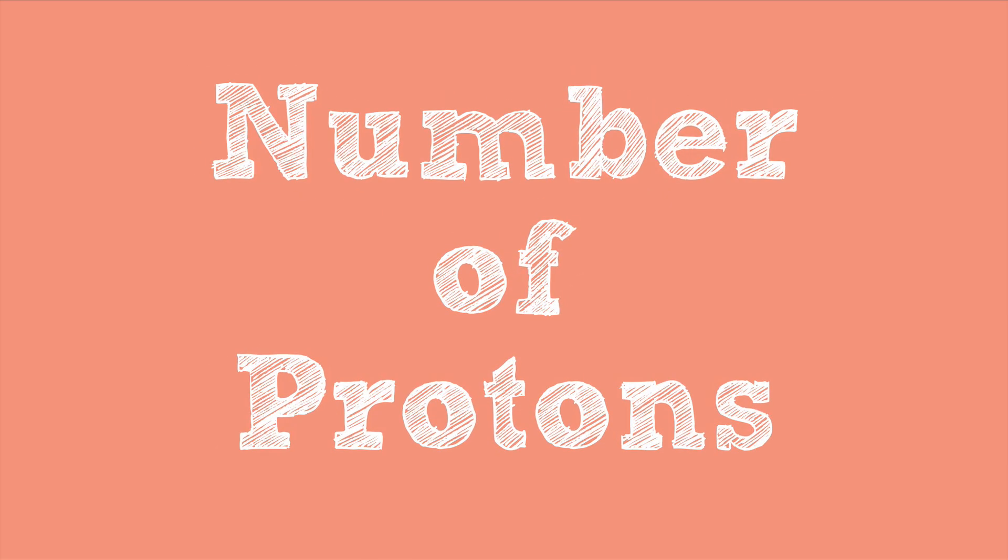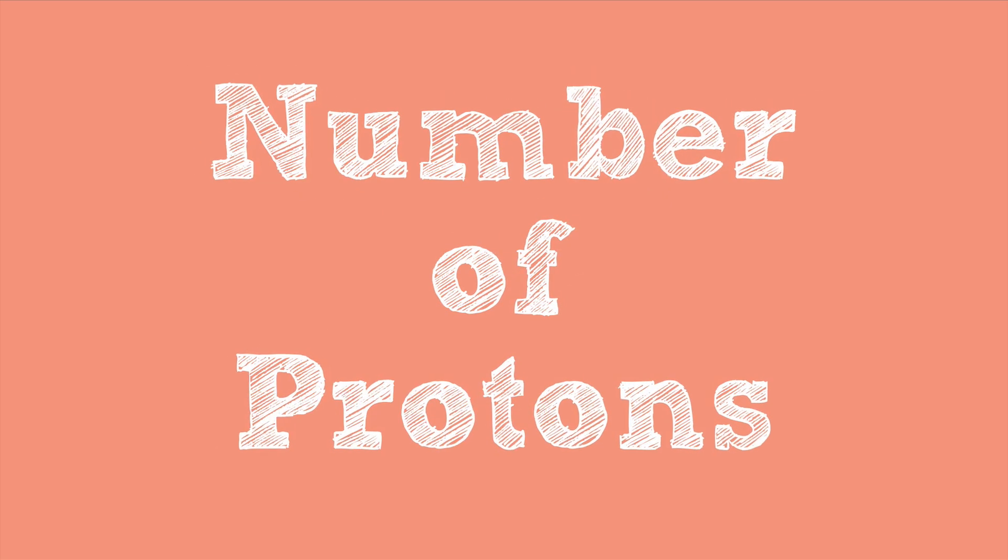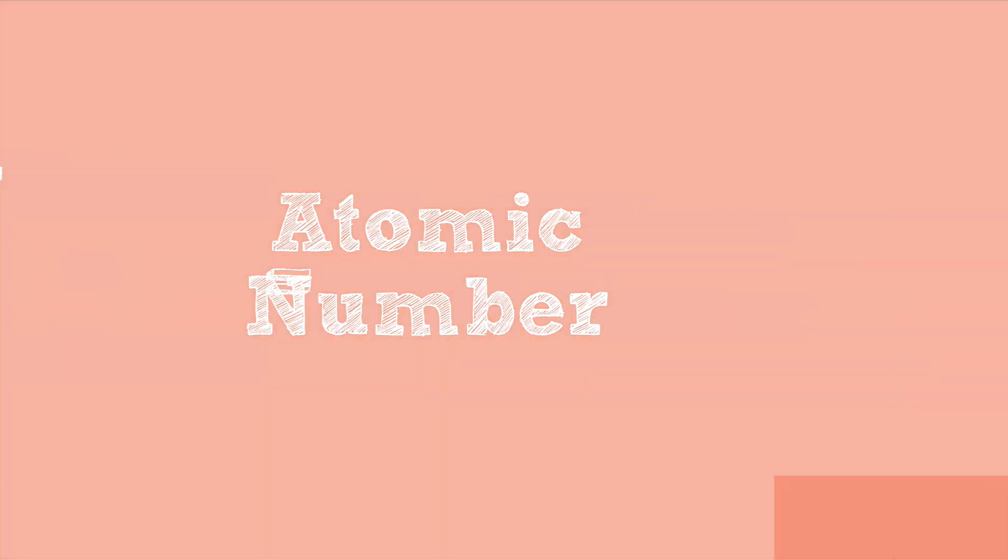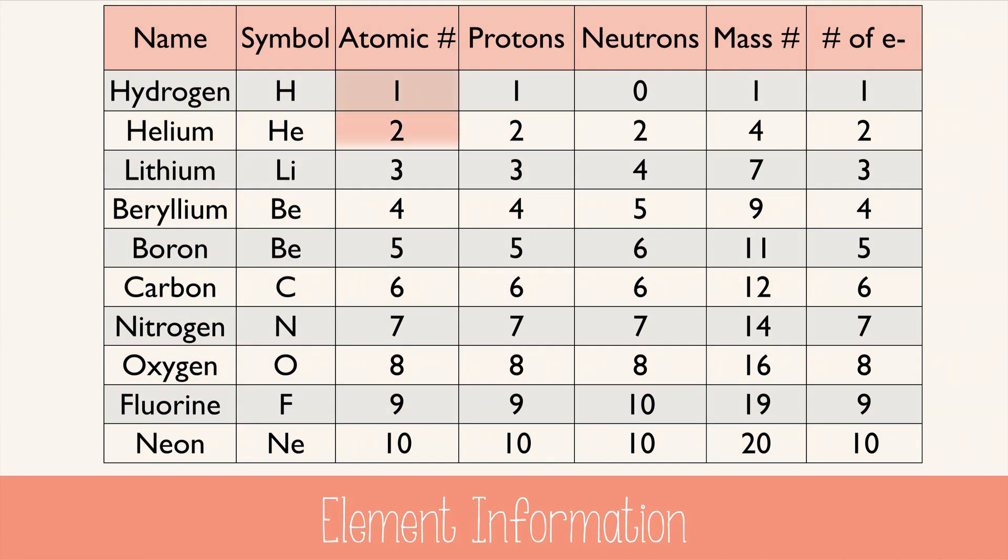The only thing that makes one element different from another element is the number of protons in the nucleus. In chemistry, the number of protons is called the atomic number. Looking at these different elements, you can see that the atomic number and the protons are the same, and the number of electrons in a neutral atom is also the same. But neutrons and mass number don't follow the same pattern.